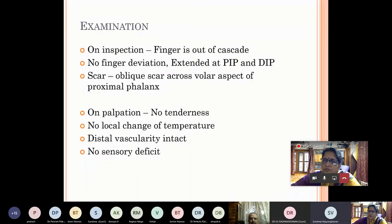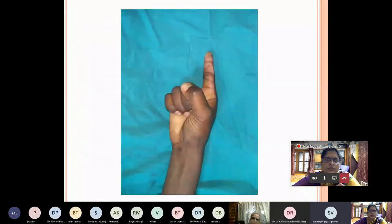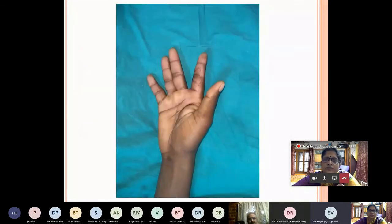On inspection, his finger is out of cascade. There is no deviation of the finger. It is extended at the PIP and DIP. The scar is visible where an oblique scar across the volar aspect of the proximal phalanx is seen. On palpation, there is no tenderness, no local change of temperature. Distal vascularity is intact and there is no sensory deficit. This was the picture provided to me, sir.